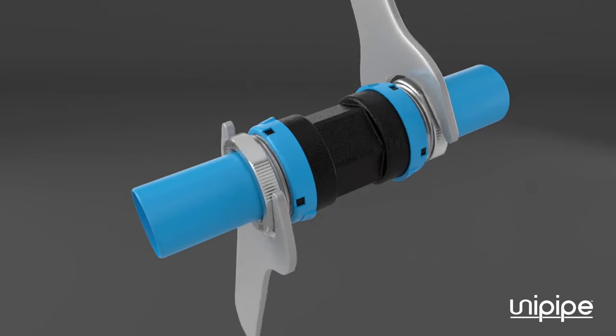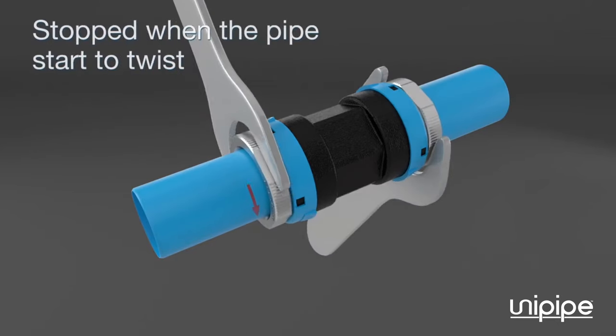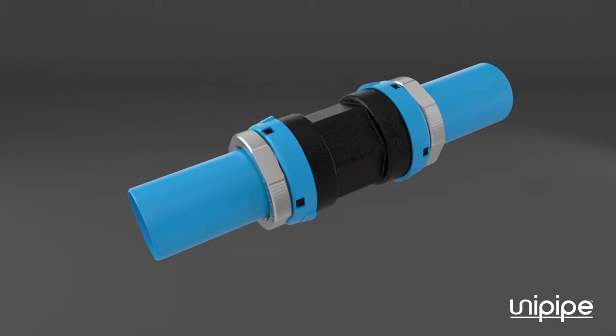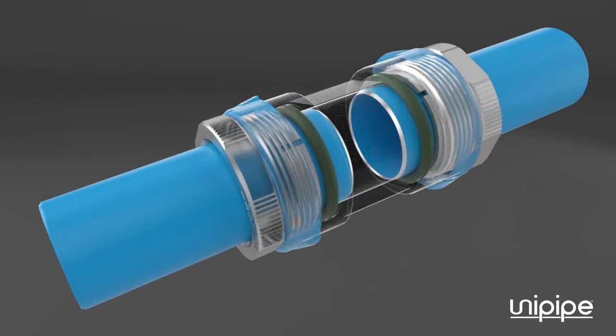By gradually putting the system under pressure, the clamp ring tightens further and cuts into the surface of the pipe. This ensures the fitting cannot come off.